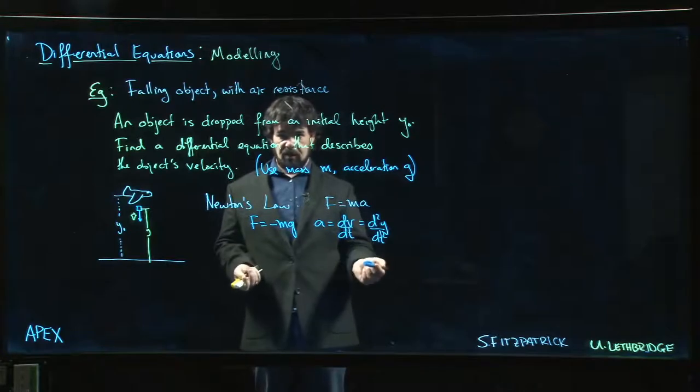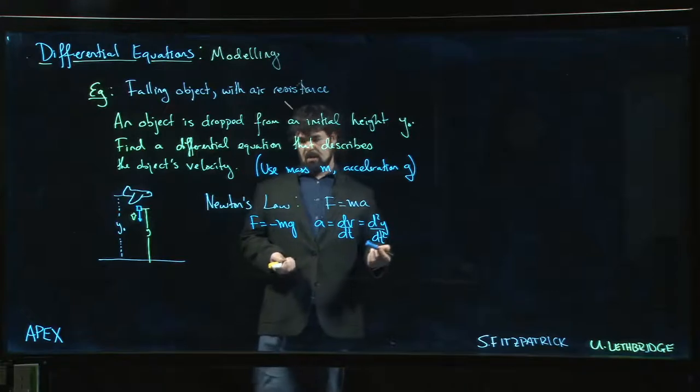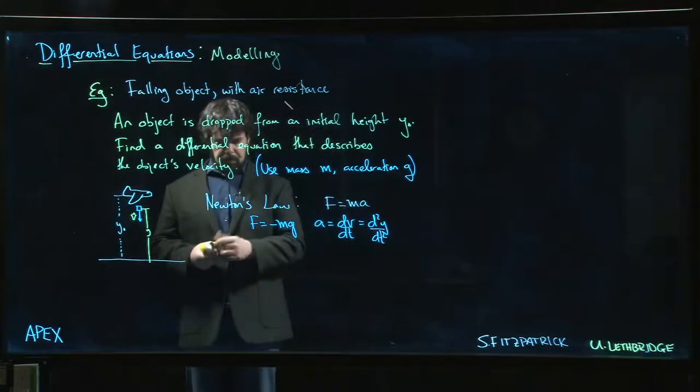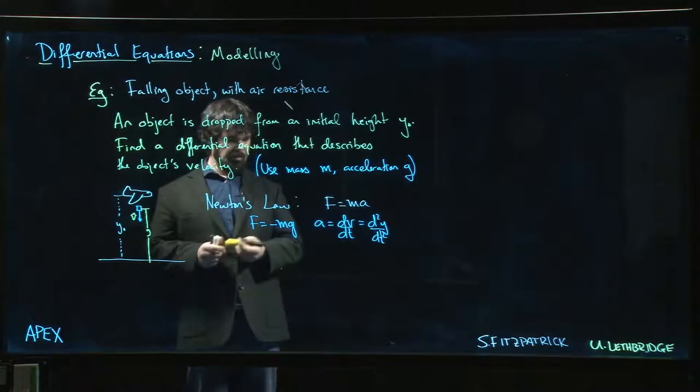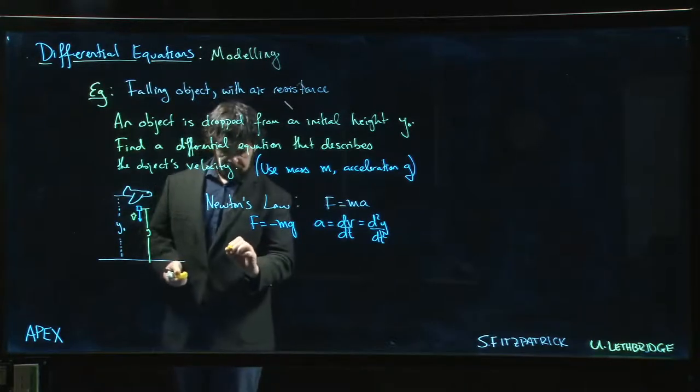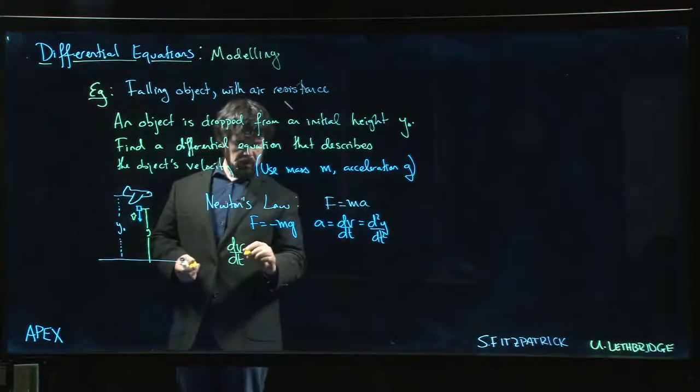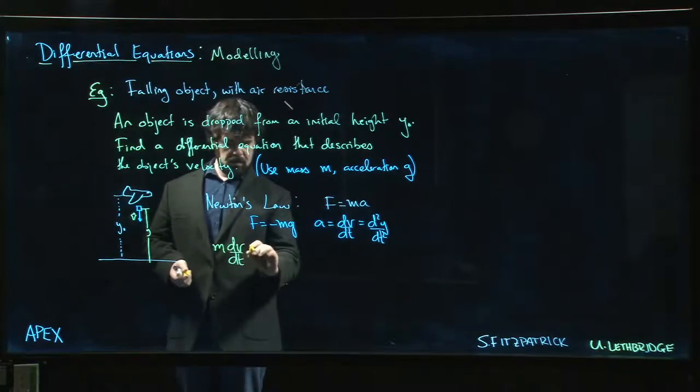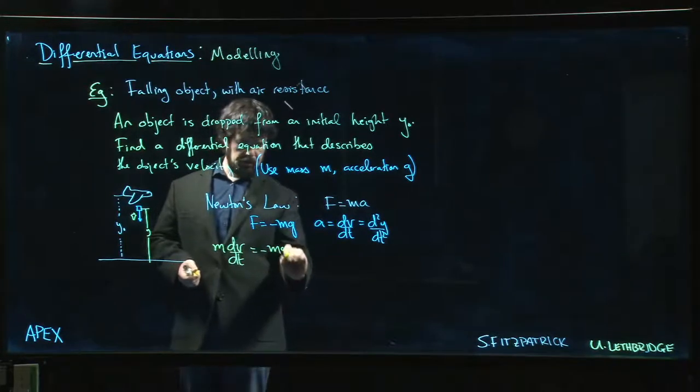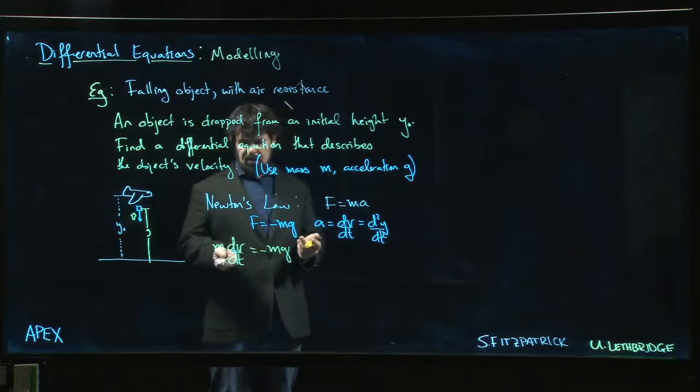We can put this together and get a very simple differential equation. We just get m dv/dt - that's acceleration - so m times a is equal to -mg.